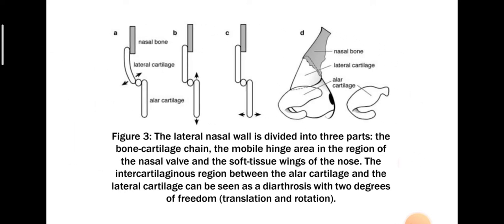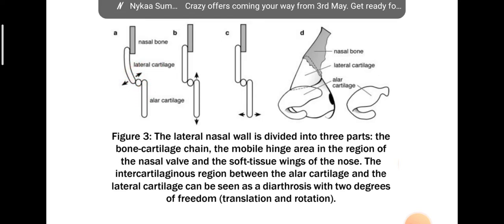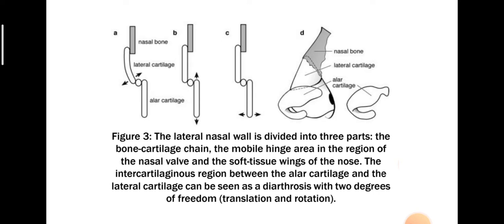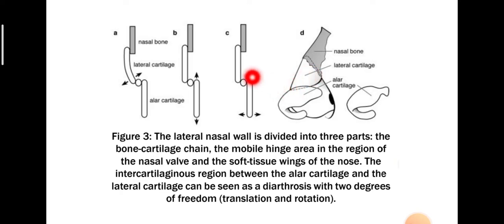The inter-cartilaginous region of the nose: the lower edge of the upper lateral cartilage meets the upper edge of the lateral crus of the lower lateral cartilage, and these curl around each other — that is called the scroll area. The inter-cartilaginous region between the alar cartilage and the lateral cartilage can be seen as a diarthrosis with two degrees of freedom, mainly translation and rotation. This is the upper lateral cartilage with a cranial and a caudal edge; this is the lower lateral cartilage with a medial crus and a lateral crus. The upper edge of the lateral crus and the lower edge of the upper lateral cartilage curl around each other — that is the inter-cartilaginous area, called the scroll area.